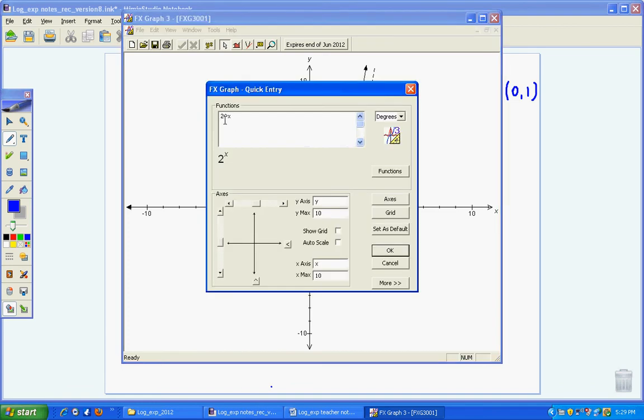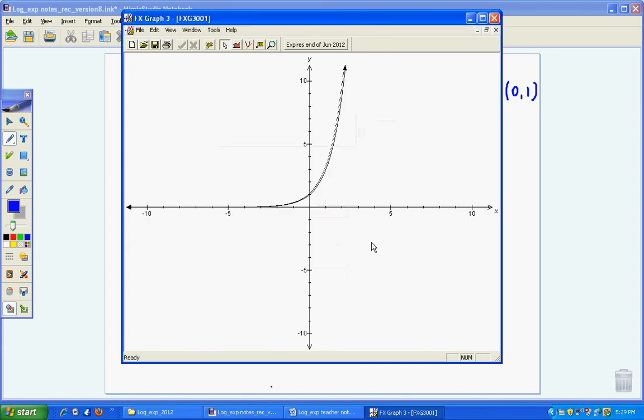Now check when we change this to 3 to the power of x. What happens? Notice that 3 to the power of x has the dotted line just above it, because natural log of 3 was 1.09. So 1.09 times 3 to the power of x puts the graph just above it.